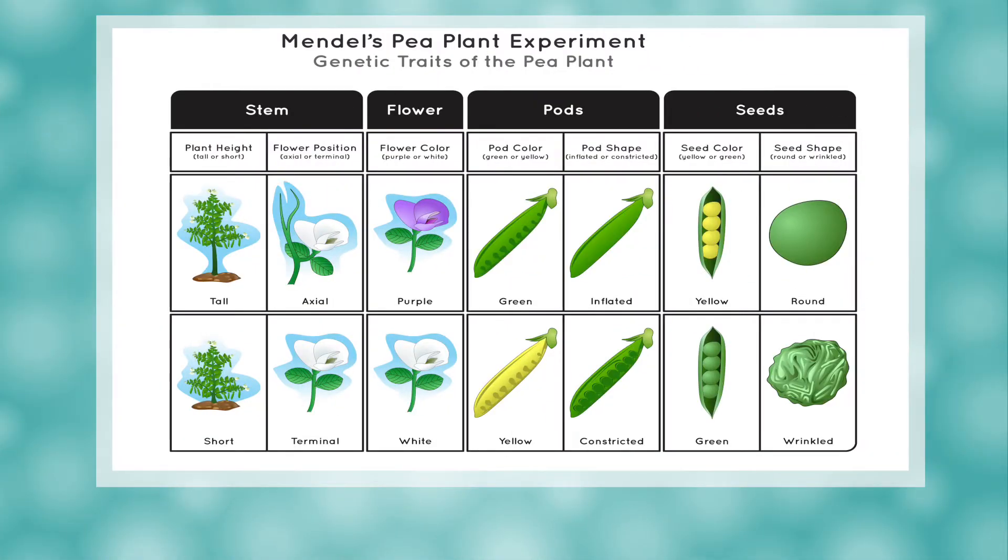Mendel specifically chose to study seven different traits of the plants. The plant height which could be tall or short. The flower position which could be axial or terminal. The flower color which could be purple or white. The pod color which could be green or yellow. The pod shape which could be inflated or constricted. The seed color which could be yellow or green. And the seed shape which could be round or wrinkled.